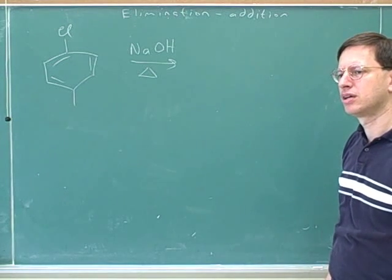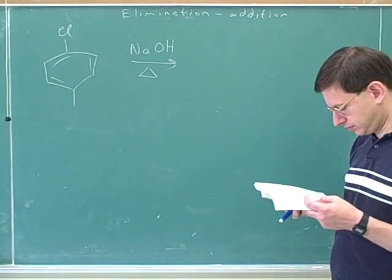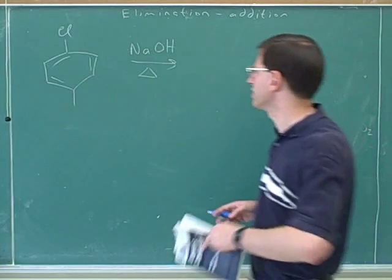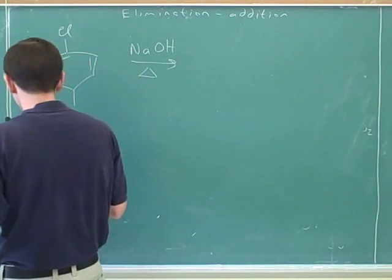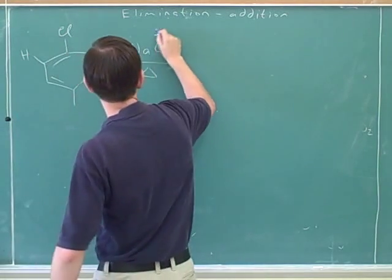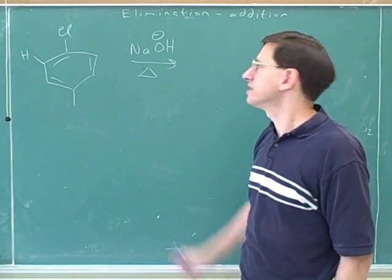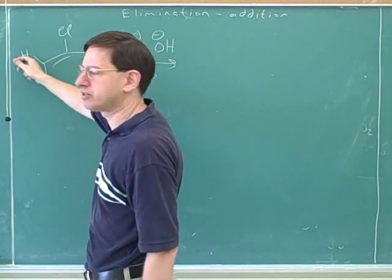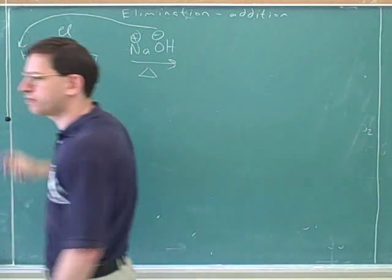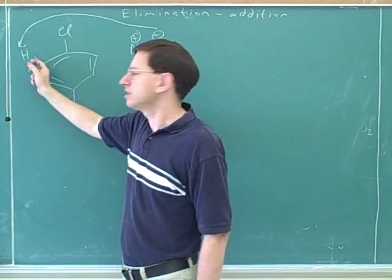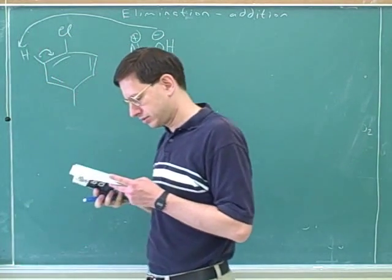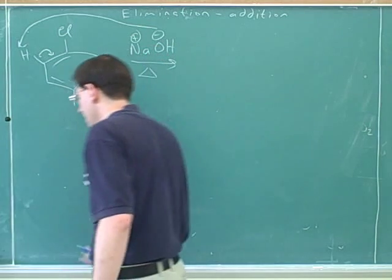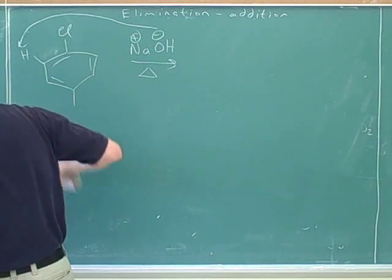What would the first step of this reaction be? We're going to use OH as a base, not as a nucleophile. Since this is an elimination, we use OH as a base — a base takes a proton. So we take this proton here, and those electrons can't be left stranded — they go here, forming the benzyne. And this step is not reversible.